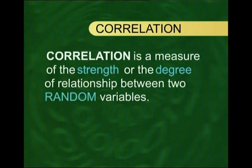The next important concept, closely related to regression, is correlation. Correlation is a measure of the strength or degree of the relationship that exists between two random variables. Note that in regression analysis, Y is a random variable but X is a non-random variable, whereas in correlation analysis, both variables are random variables. For example, if you want to determine the strength of the relationship between the heights and weights of young children, both height and weight are regarded as random variables.